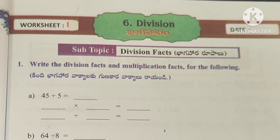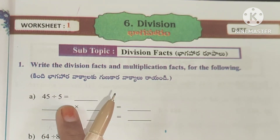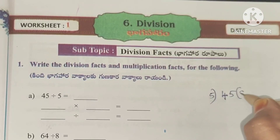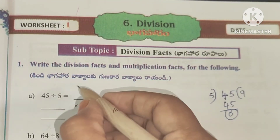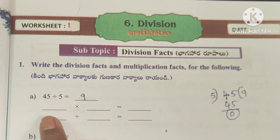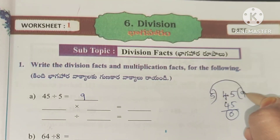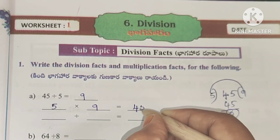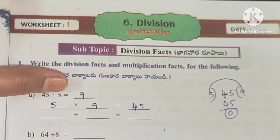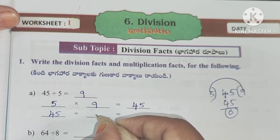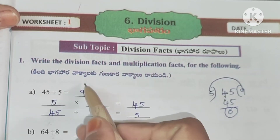We are going to see division facts and multiplication facts. 45 divided by 5 — if we divide 45 by 5, the answer is 9. So 45 divided by 5 equals 9. For multiplication facts: 5 into 9 equals 45. And interchanging: 45 divided by 9 equals 5.